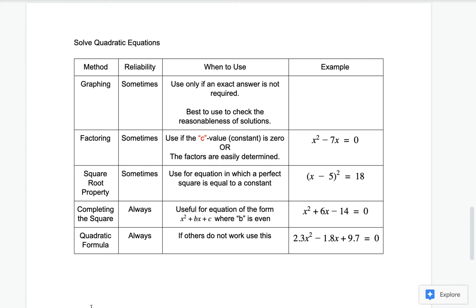Those first three methods only sometimes work. Completing the square always works. It's useful for equations in the form x squared plus bx plus c, where b is even.